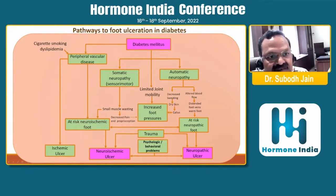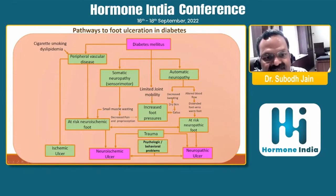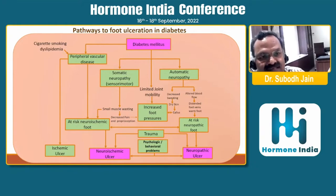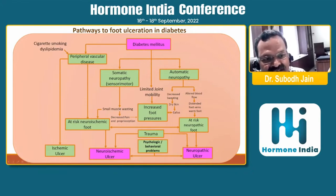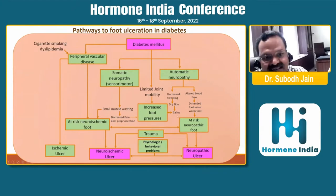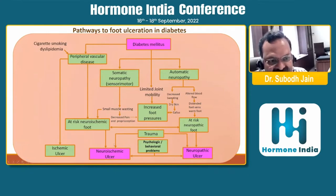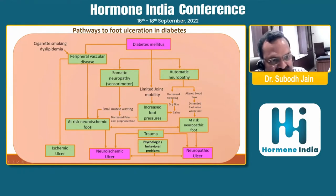Autonomic neuropathy is associated with somatic neuropathy in most patients, leading to decreased sweating, dry skin, and callus formation due to unequal pressure distribution and increased foot pressure. Most diabetic patients with prolonged diabetes duration have limited joint mobility — LJM — which also leads to unequal foot pressure distribution. These factors lead to callus formation, dry skin cracking, and neuropathic ulcers. Peripheral vascular disease combined with neuropathy leads to neuroischemic ulcers.